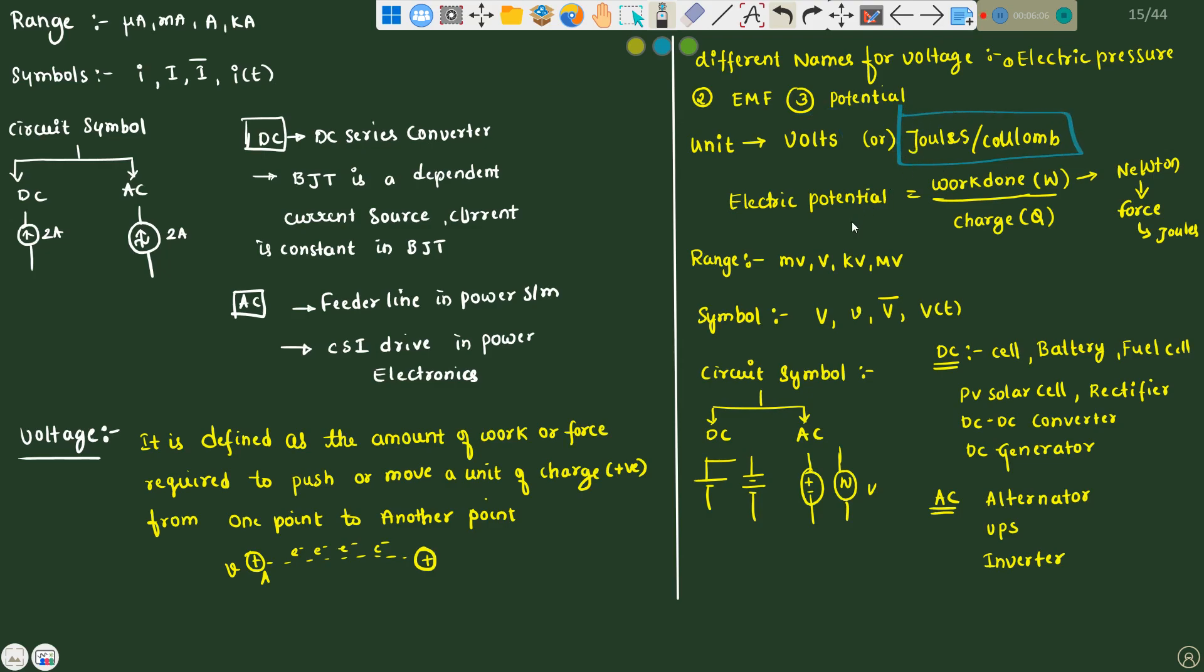Or joules per coulomb. Electrical potential is nothing but electrical potential equals to work done divided by charge. Work done is from Newton, force, and joules. Range of voltage is millivolt, volt, kilovolt, megavolt. Symbol is represented capital V, small v, v vector, and v of t.